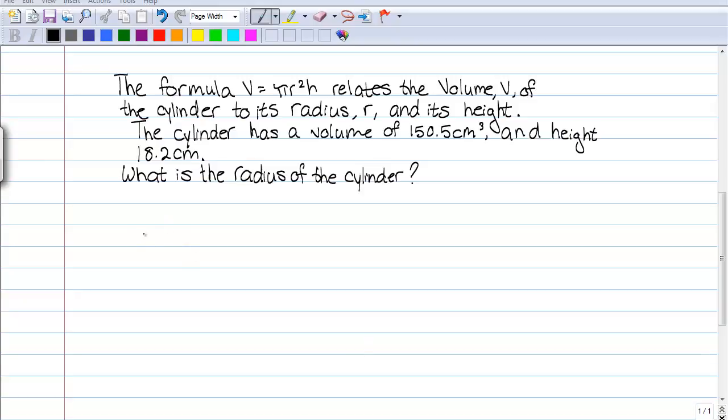The formula V equals pi times r squared times h relates the volume V of the cylinder to its radius r and its height h. This cylinder has volume 150.5 centimeters cubed and height 18.2 centimeters.